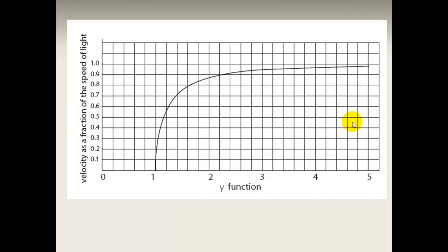This is another way of presenting the gamma factor and it's easy to read off values. At 0.9c, gamma is about 2.2. At 95% of c, it's about 3. At 99%, gamma is about 5. So an event happening at 99% of the speed of light — where proper time is 1 second in that frame — will be measured by us as taking 5 seconds.